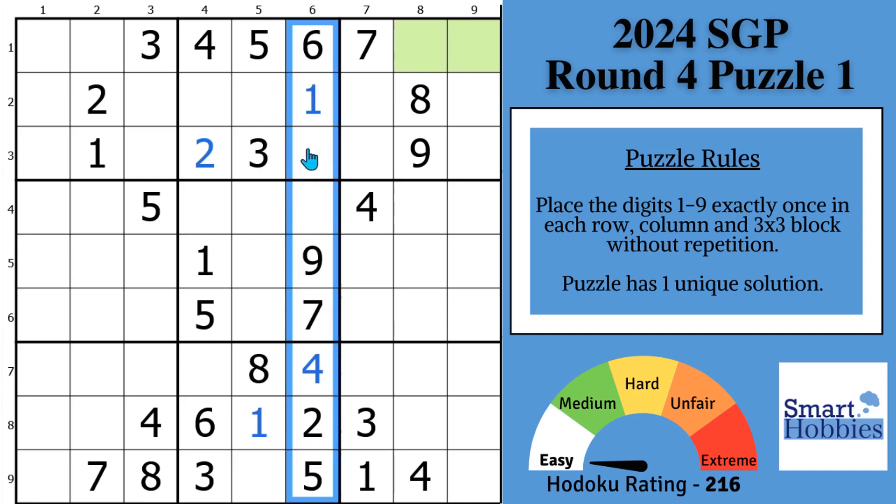We only have two cells missing, a 3 and an 8. Well, I have a 3 right there. This has to be a 3. That has to be your 8. And then we can solve with this 8, an 8 right here, in block 5.